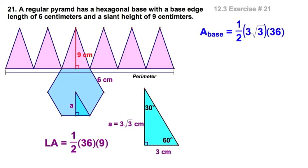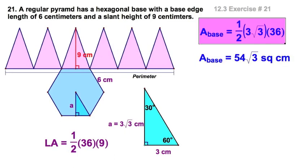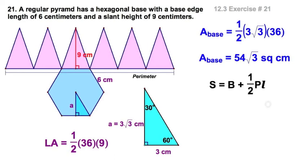Let me simplify the expression for the base right here. Half of 36 is 18, 18 times 3 is 54. 54 radical three square centimeters. Now let's put it all together.